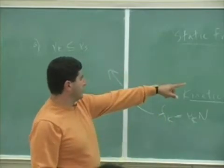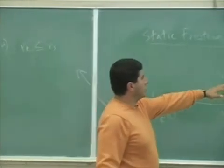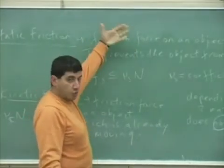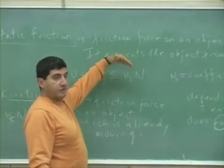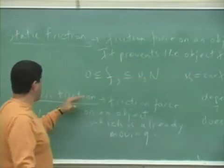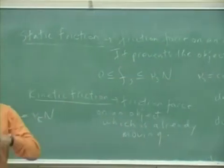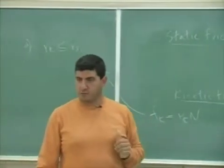Remember, mu S tells you how hard it is to make the object move, how much the friction force resists you to prevent it from moving. Kinetic friction force tells you what's the friction on it while it's moving or after it's moving.